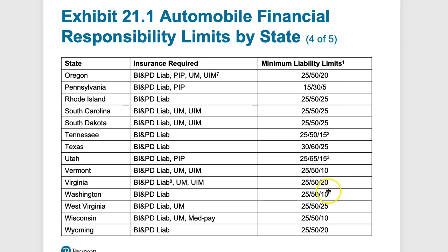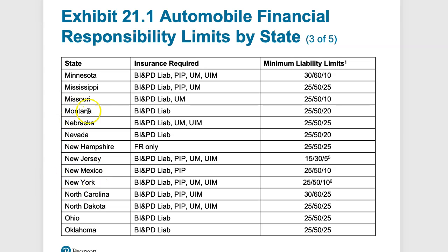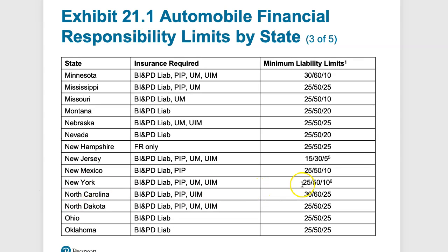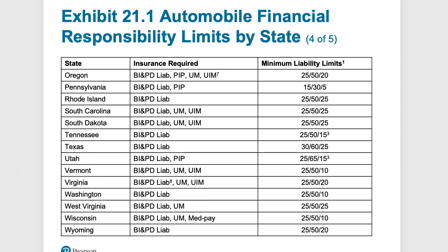You can always purchase above the minimum. You have to recognize that each state is going to have a different value. If you have insurance from a state with relatively low insurance values, say Louisiana, and you have an accident in New York, your minimums will be raised to the New York minimums. This is why car insurance prices can be drastically different between different states — minimum insurance levels, population density, and frequency of car theft and accidents all factor into your overall rate.